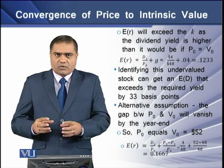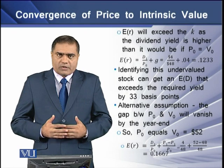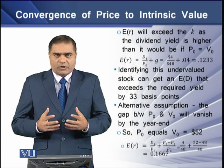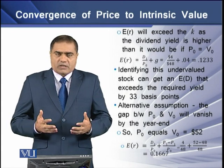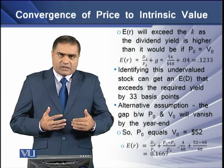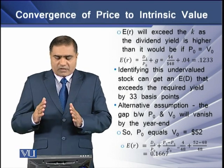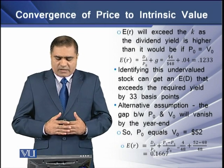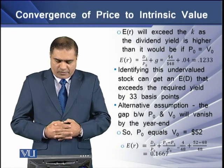If we quantify our assumption, expected return equals d1 over p0 plus g. We have d1 of four dollars and current stock price of 48, with a growth rate of four percent. The resulting answer is 12.33 percent, so our expected rate of return has increased. Identifying this undervalued stock, an investor can expect a dividend yield exceeding the required return by 33 basis points.